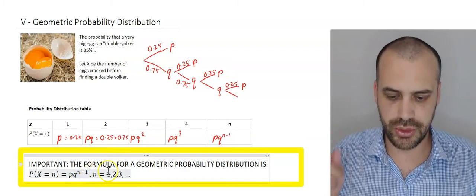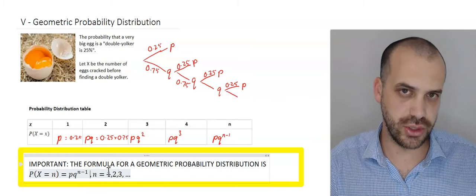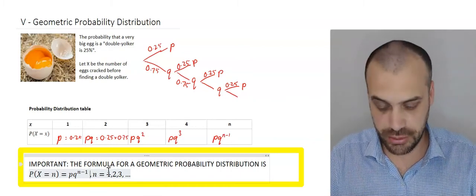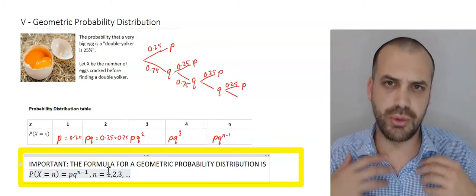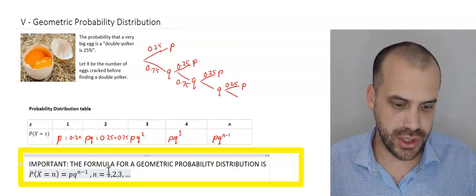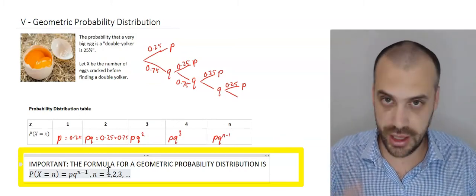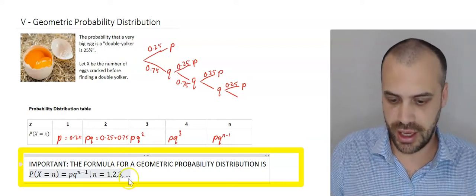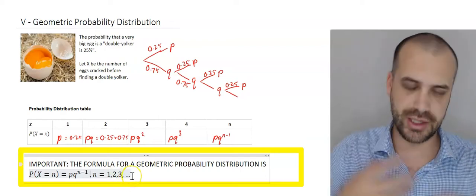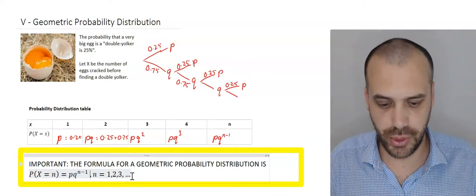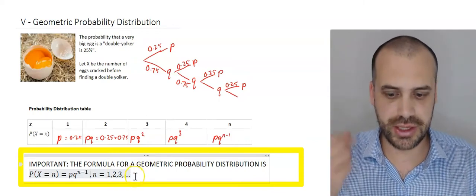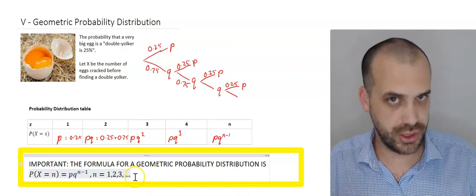Where N is equal to 1, 2, 3, dot dot dot. The dot dot dot actually means that goes on forever to infinity. Because if you were a very unlucky person, you could keep cracking eggs forever and ever, and it would go on forever and ever. At least in the theoretical, mathematical world, that is. Okay, that's the geometric probability distribution. Thank you.